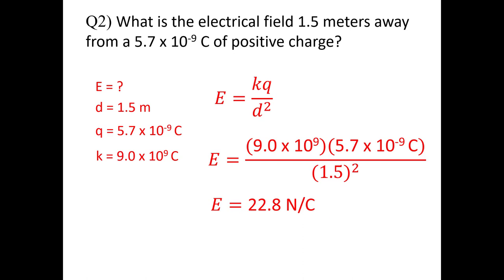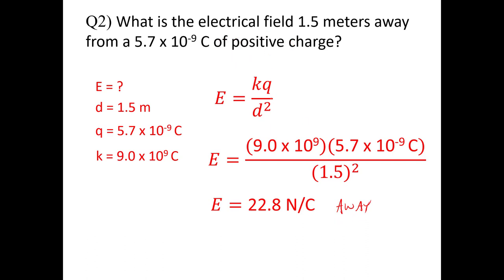If you want to give a direction to the electrical field, since it's from a positive charge, the direction is away from it. If it's a negative charge, the direction is going to be towards it. Some of these questions in the homework or problem set will ask for direction, so always state away for positive and towards for negative.